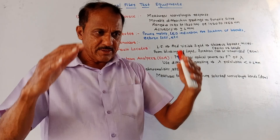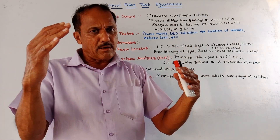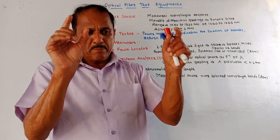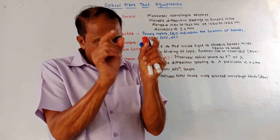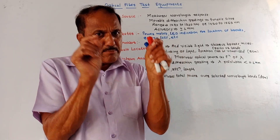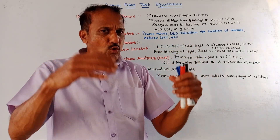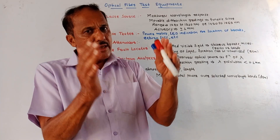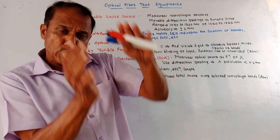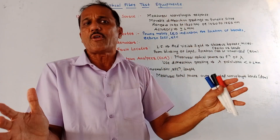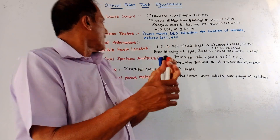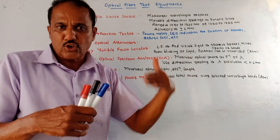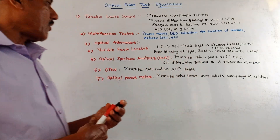Third test equipment is optical attenuator. As the name indicates, whenever signals are passing through the optical fiber cable, attenuation is taking place. Every receiver needs a sufficient or limited input optical power. If you apply excess optical power, it may damage the receiving device. So in many applications it is required to reduce the strength of the optical power, and optical attenuators are used to give measurement of the attenuation of the signal passing through the optical cable.